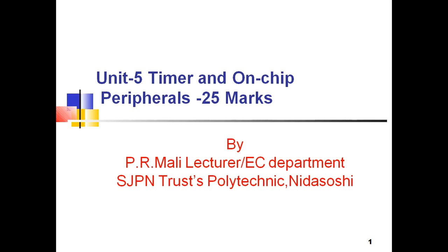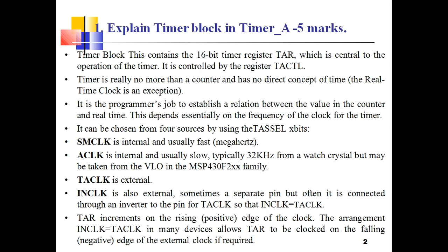Unit number five starts with question number one: explain the timer block in Timer A, which is going to be asked for 5 marks. Here I am going to explain the timer A register and how the timer block works. This contains the 16-bit timer register TR, which is central to the operation of the timers and is controlled by the timer control registers.